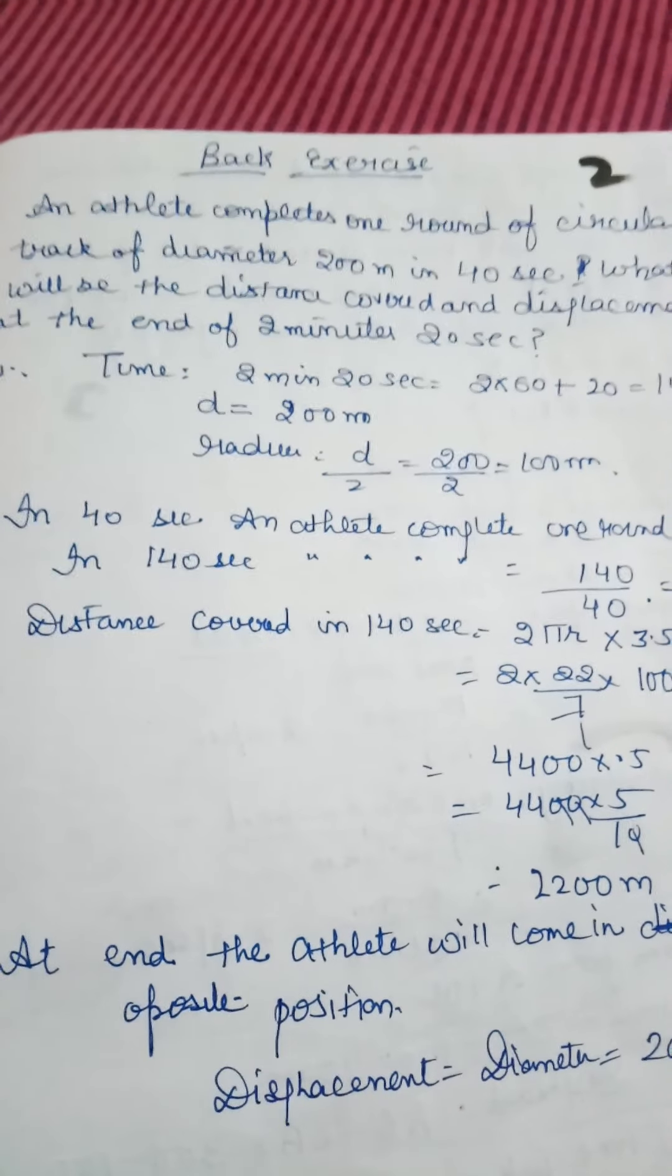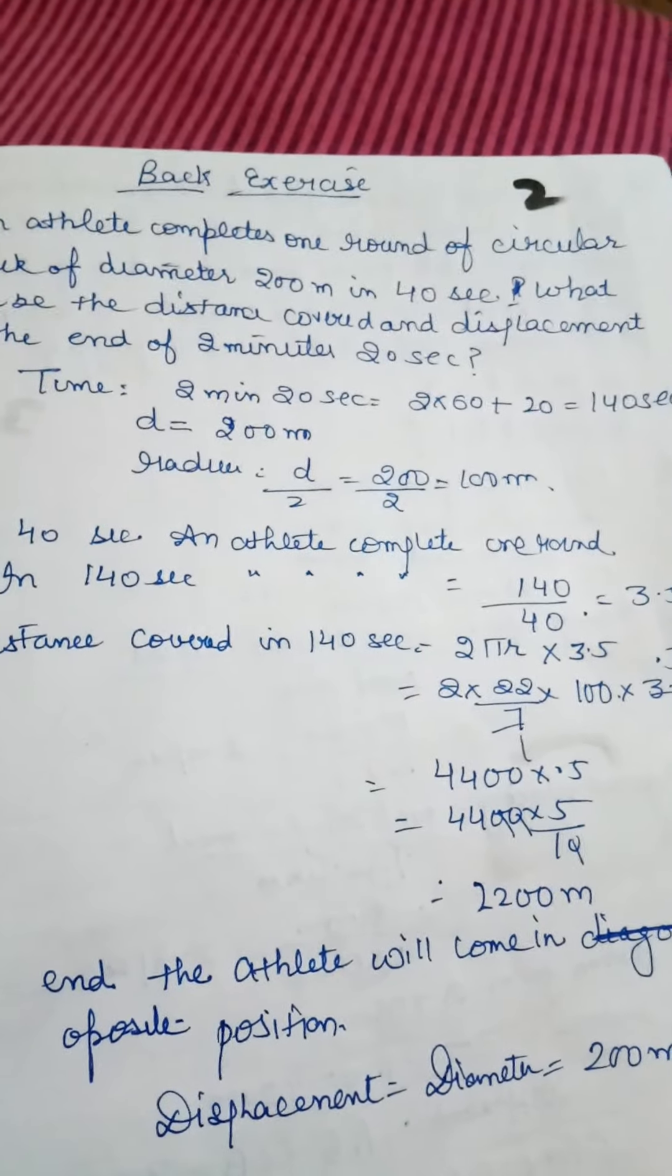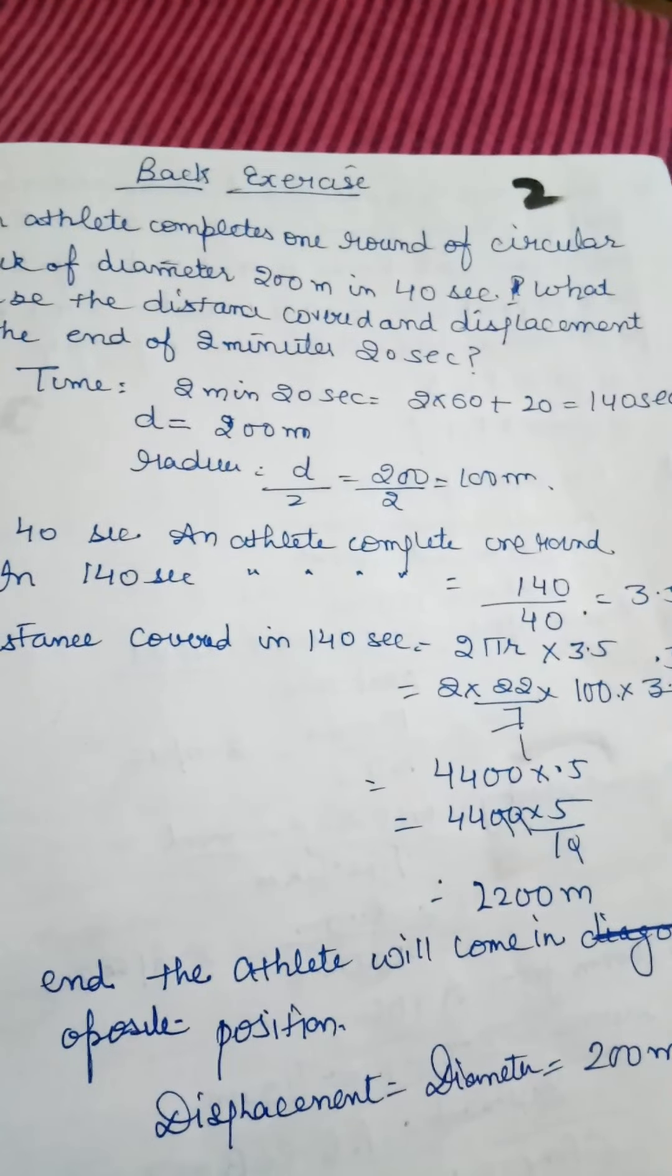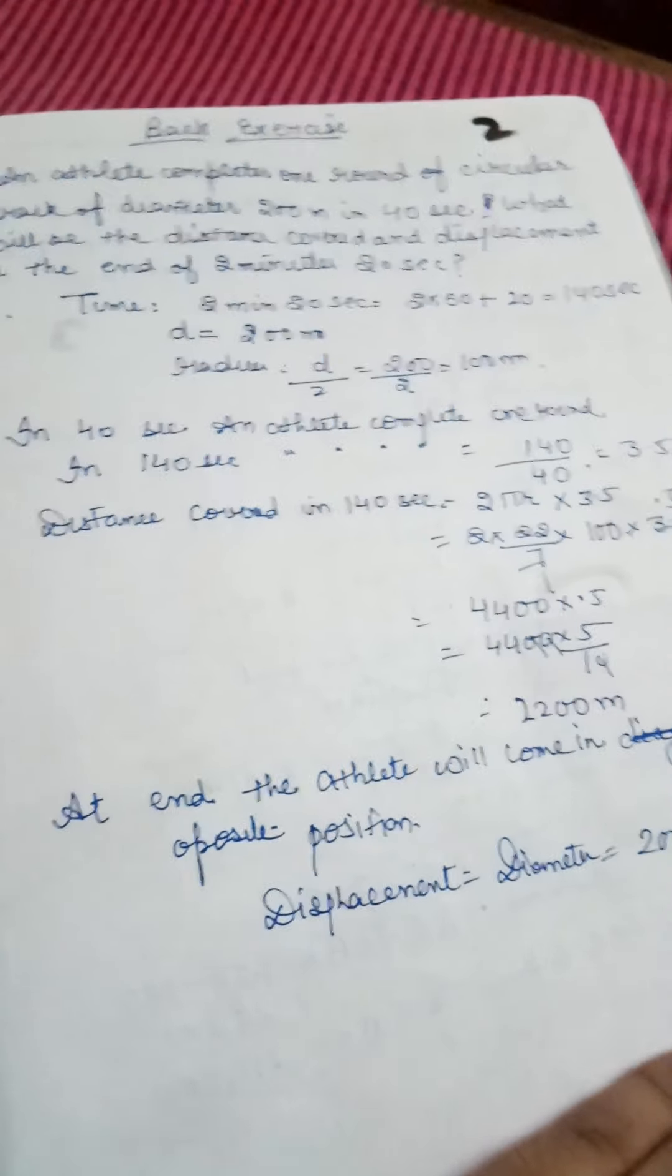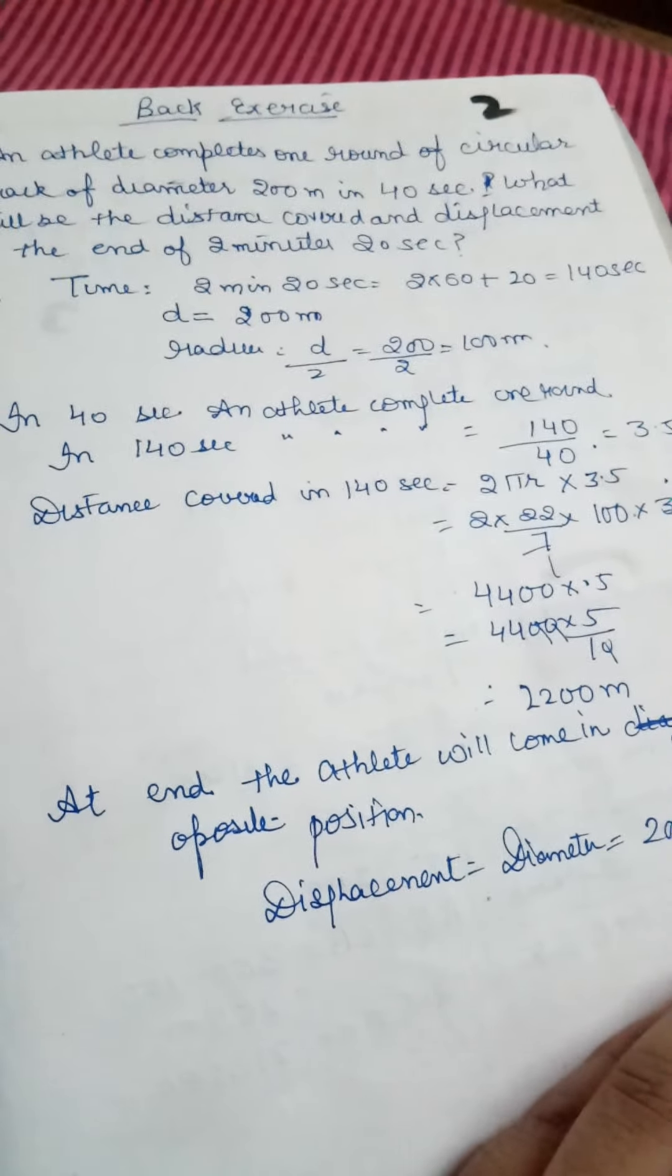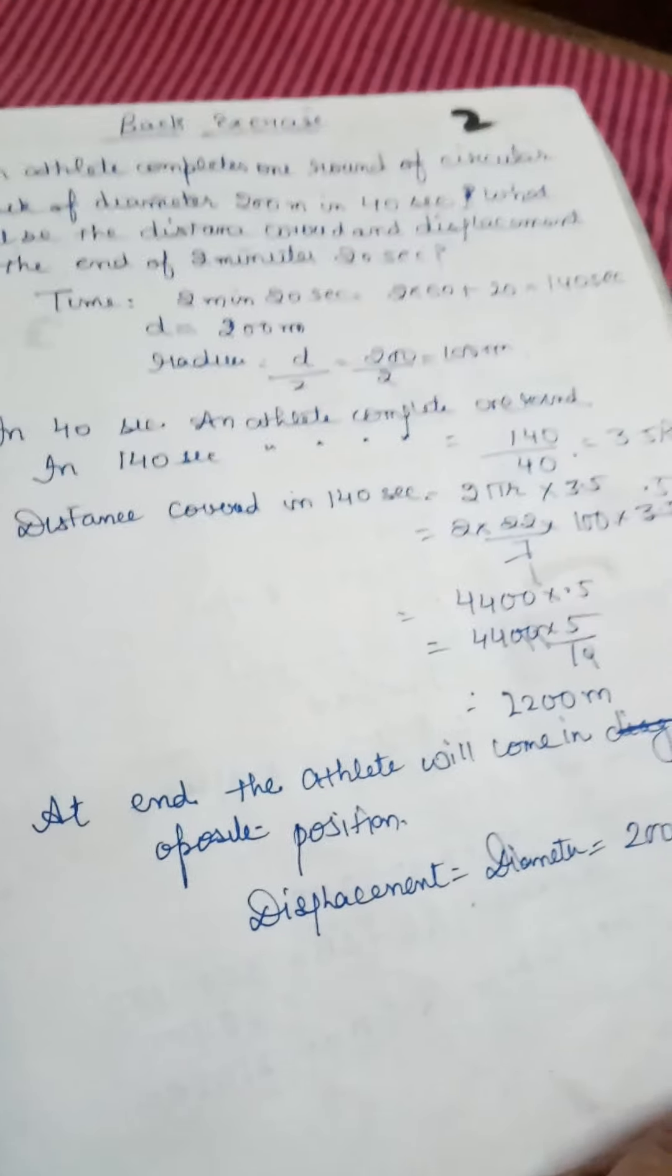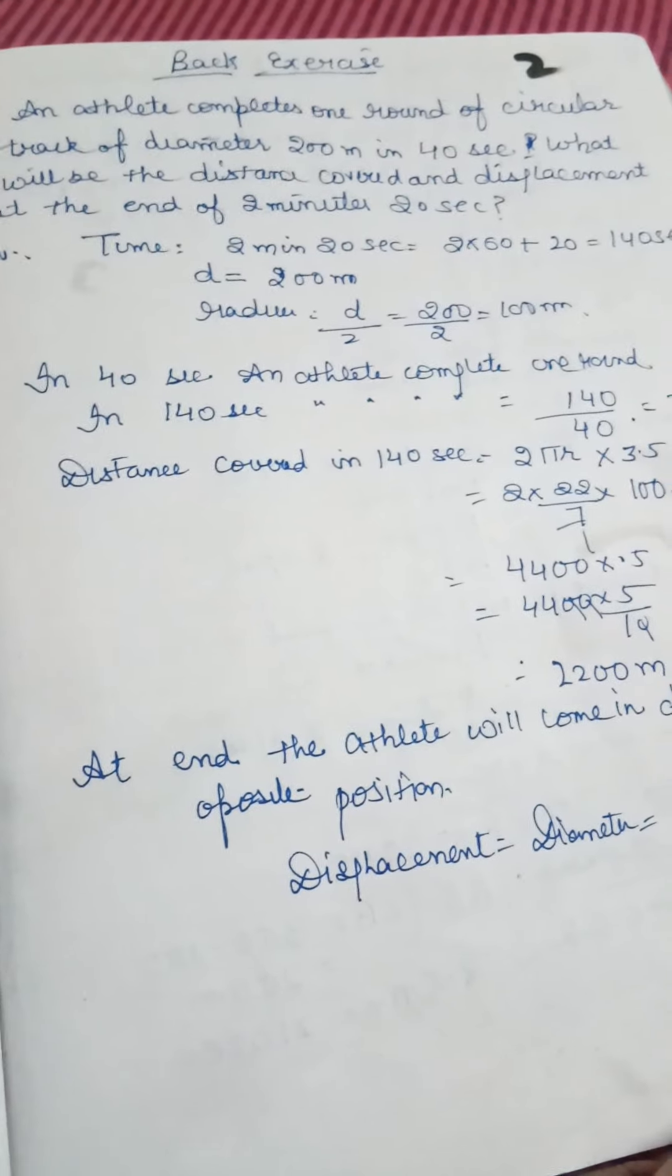Time is 2 minutes 20 seconds. Convert: 2 minutes 20 seconds equals 140 seconds. Diameter is 200 meters, so radius is 100 meters. In 40 seconds the athlete completes one round. In 140 seconds: 140 divided by 40 equals 3.5 rounds.